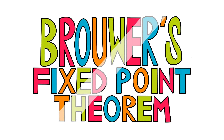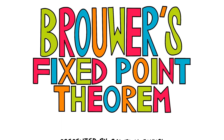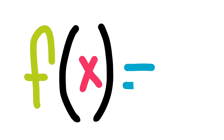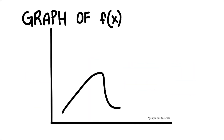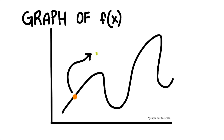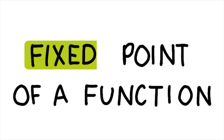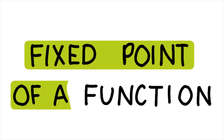Brouwer's Fixed Point Theorem asserts that for such a function f, there is at least one point x in which f(x) is equal to x. That basically means that the function f is mapping x onto itself, and such a point is called a fixed point of the function.